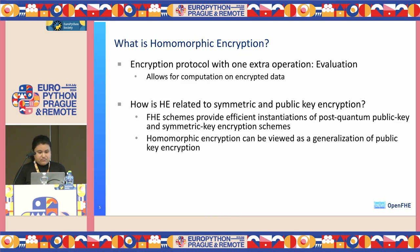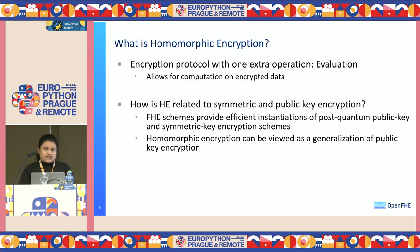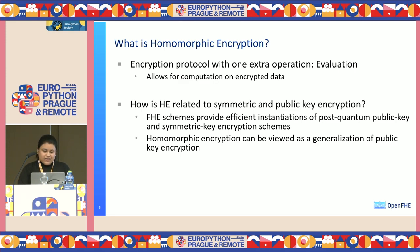Homomorphic encryption is a cryptographic method and protocol with one extra layer of operations: evaluation. This allows mathematical operations to be performed on encrypted data without decrypting it, enabling private ML or ML on encrypted data. Computation can be carried out on encrypted data and results obtained in encrypted format itself without the decryption key, maintaining confidentiality of both the data and the ML model.